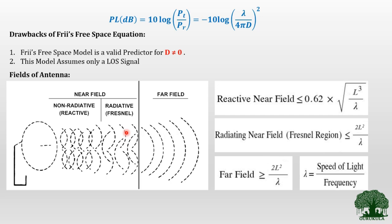All these regions are calculated using specific expressions. The reactive region boundary is calculated by the formula 0.62 × sqrt(L³/lambda). Any region within this boundary is called the reactive or non-radiative region, where L stands for the largest physical dimension of the antenna and lambda is the wavelength — given by C/F, where C is the speed of light and F is the design frequency. Substituting all values gives a distance; any region less than this boundary is the non-radiative or reactive region.